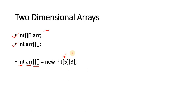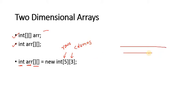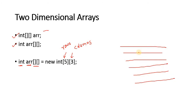The two indexes denote the rows and columns in an array. The two dimensional array can be considered as a matrix. The first index gives the number of rows while the second index gives the number of columns. This particular array will have a total of five rows and three columns.